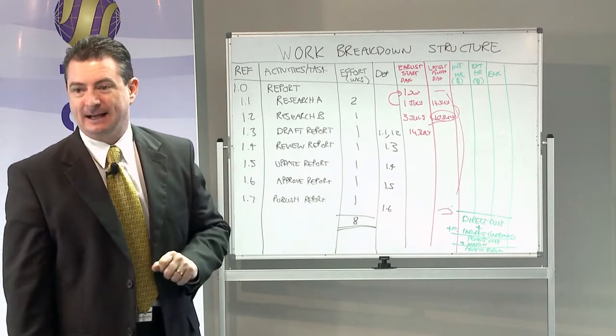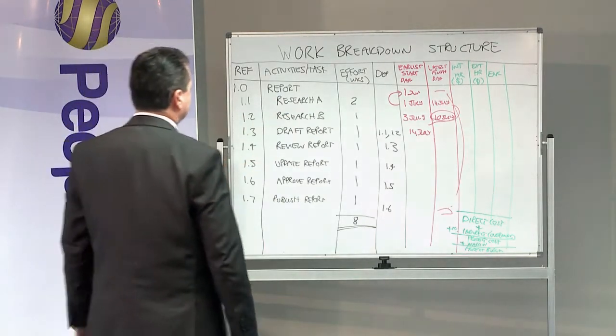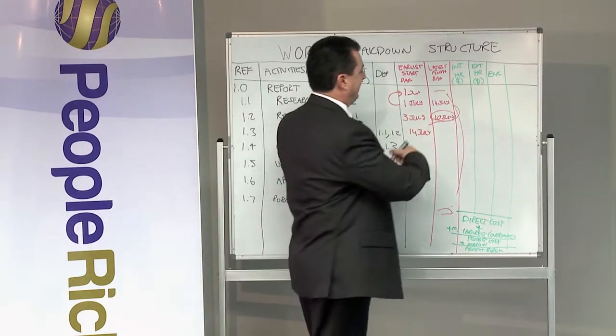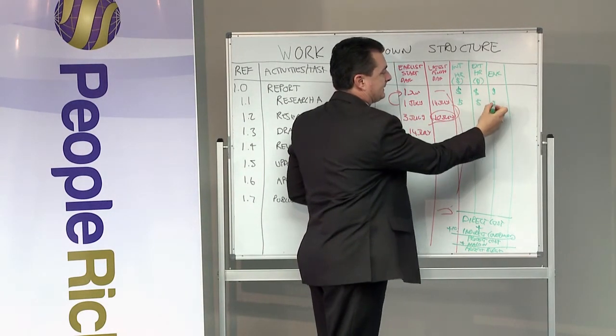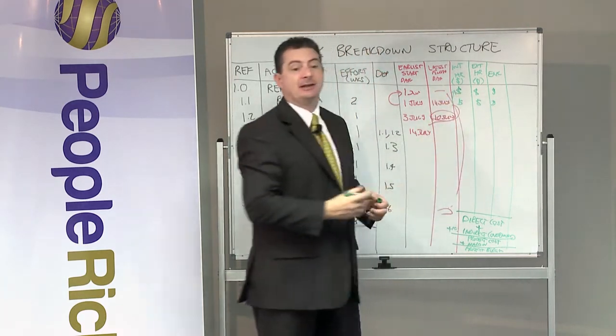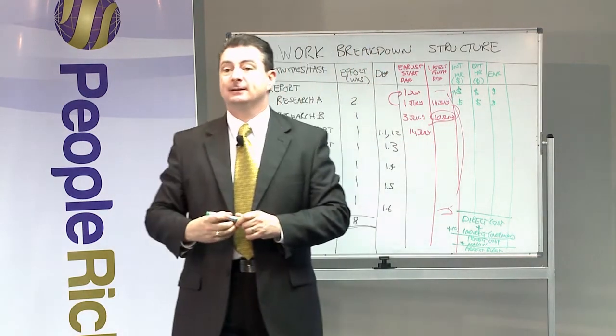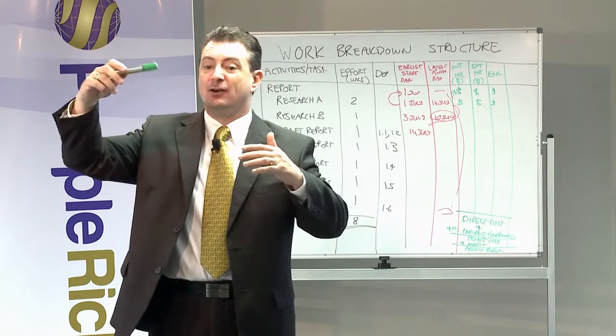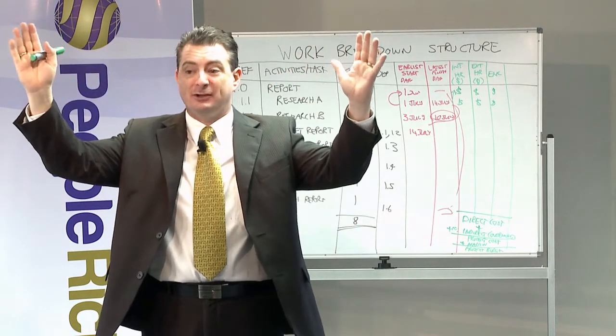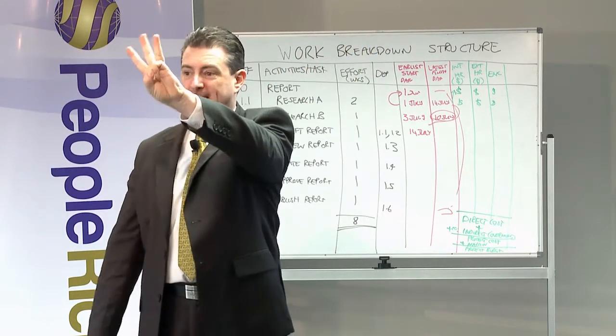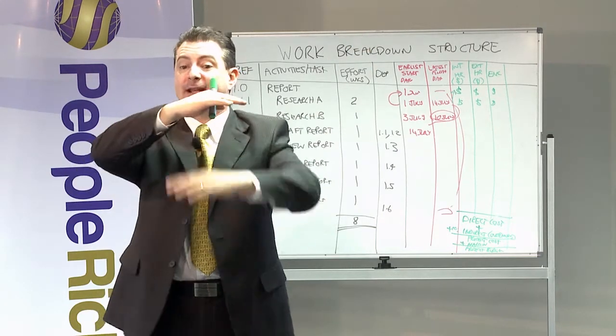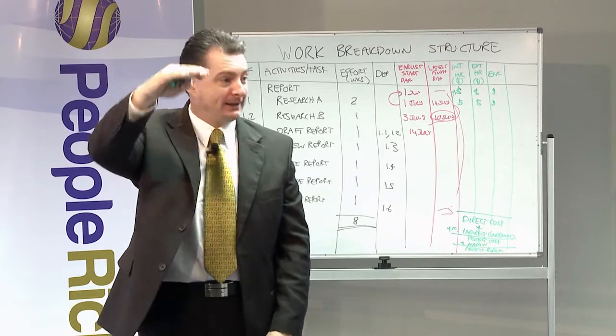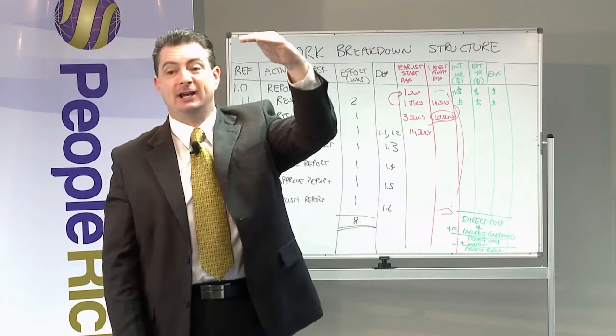Here's the thing to note: once I've got a cost on each of these at a task level, you can see that the task level adds up to give me what the cost of the report is. And then if I add up all the activities, I've got what we call the project budget. So costs are calculated at three levels: task level, they add up to the activity level, and then all the activities add up - that gives me the project's budget.